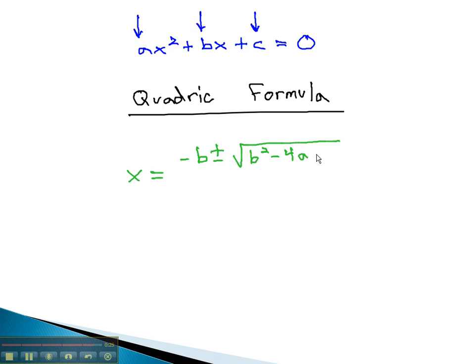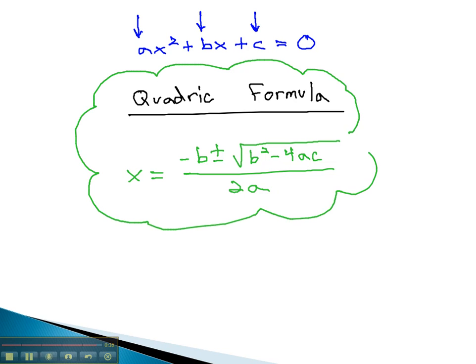The quadratic formula says that x is equal to the opposite of b, plus or minus the square root of b squared, minus 4ac, all over 2a. This formula we will use a lot, and is very useful to commit to memory, a formula that we found simply by completing the square on ax squared plus bx plus c equals 0.